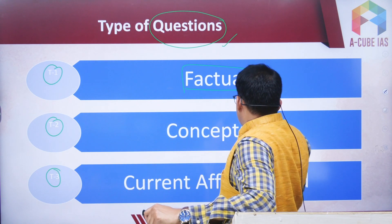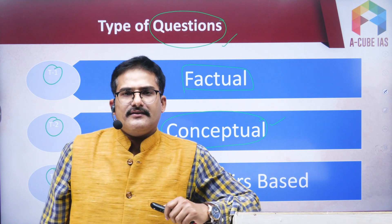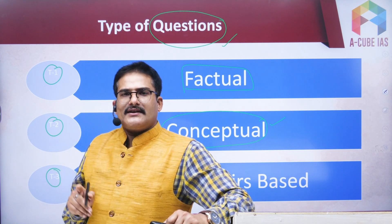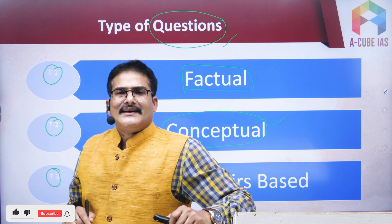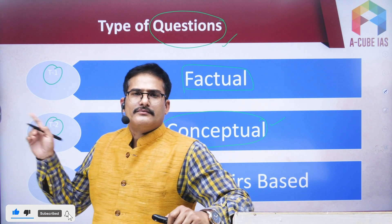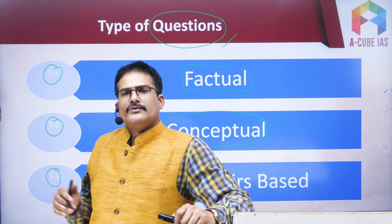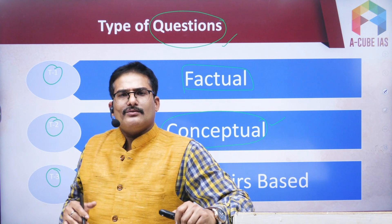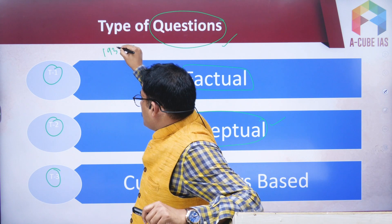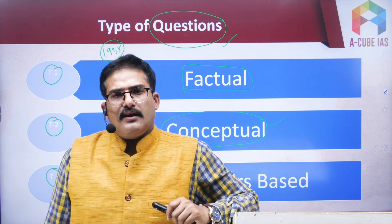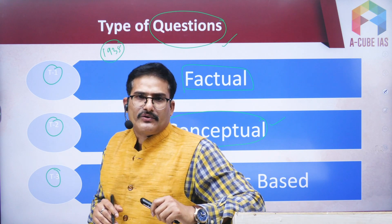The second and very important type is conceptual questions — this is where UPSC plays a trick. Conceptual clarity is essential. For example, to understand why the Cripps Mission failed, you need background knowledge. Similarly, to understand how the Government of India Act 1935 provided a blueprint for the Indian Constitution, you must be clear on its nitty-gritty details.